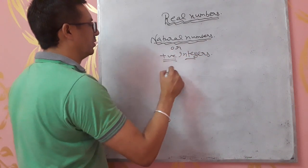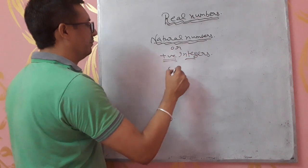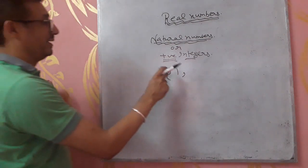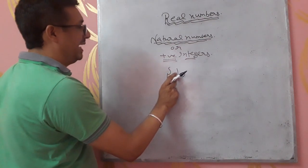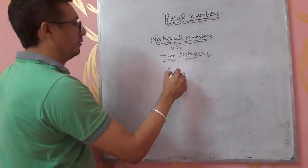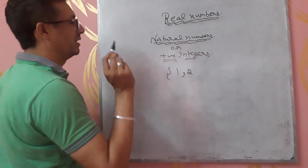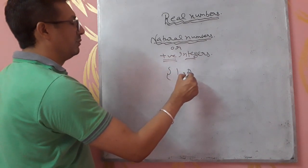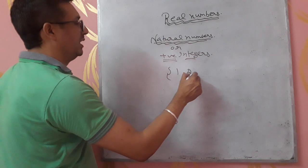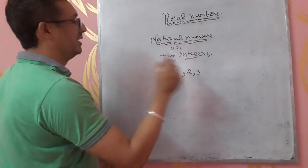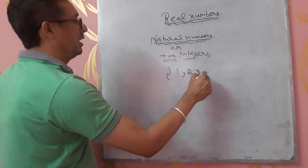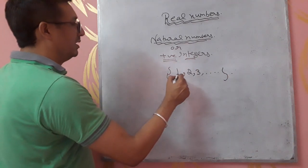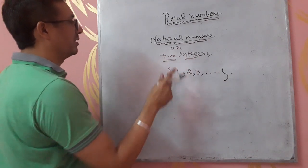Natural numbers are the numbers that start with 1. Just as you add 1 plus 1 to get 2, we get another natural number. So by continuously adding 1, we keep getting another natural number. These numbers are natural numbers.